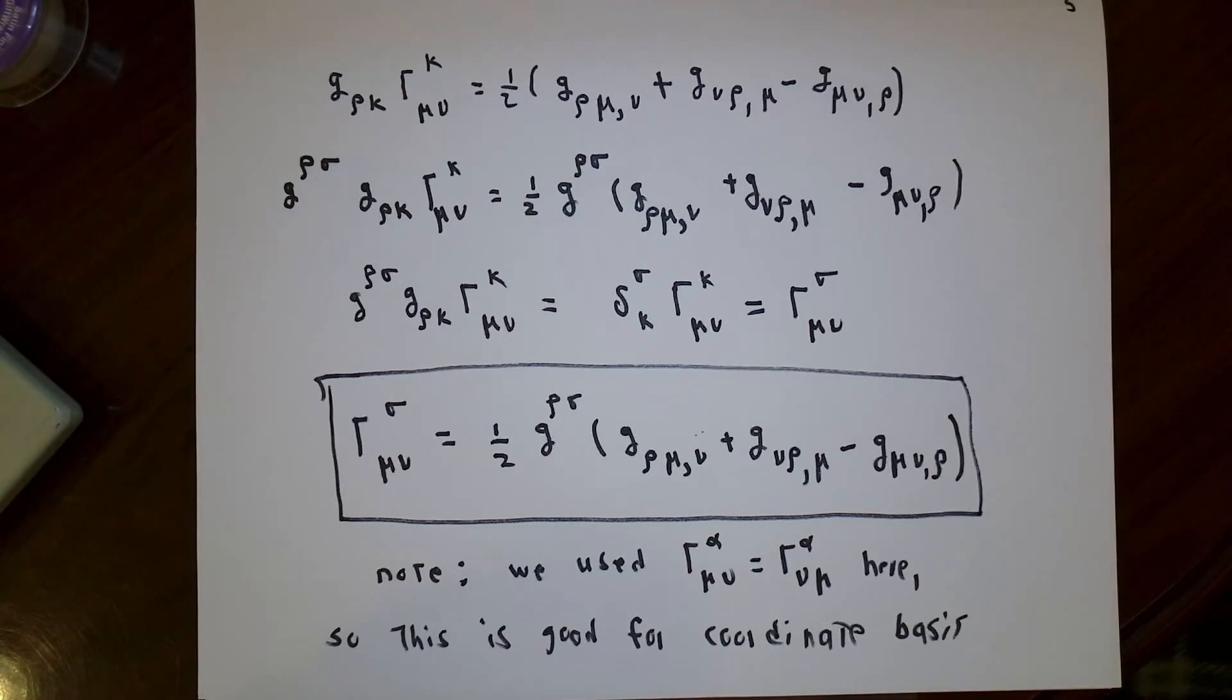So believe it or not, we have solved that system of equations for 64 variables in terms of 64 equations, or 40 if we take advantage of the symmetry, by doing a whole bunch of weird index manipulation. It's important to remember something. We used the fact that the Christoffel symbols are symmetric in the lower two indexes in order to get this. So this is a good calculation if you are using a coordinate basis, a basis of the type we've been talking about. Otherwise, if you're not, then this is not necessarily the correct formula. We're going to stick to coordinate bases as much as we can.